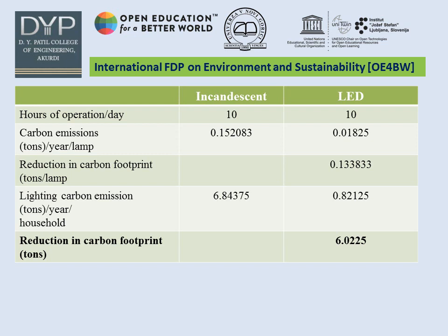Carbon footprint per year per lamp for incandescent bulb is 0.152083 tons, and for LED it is 0.01825 tons. The reduction in carbon footprint per lamp in tons for LED is 0.133833. Lighting carbon emission per year per household for incandescent is 6.84375 tons, for LED it is 0.82125 tons, and the reduction in carbon footprint for LED is 6.0225 tons.